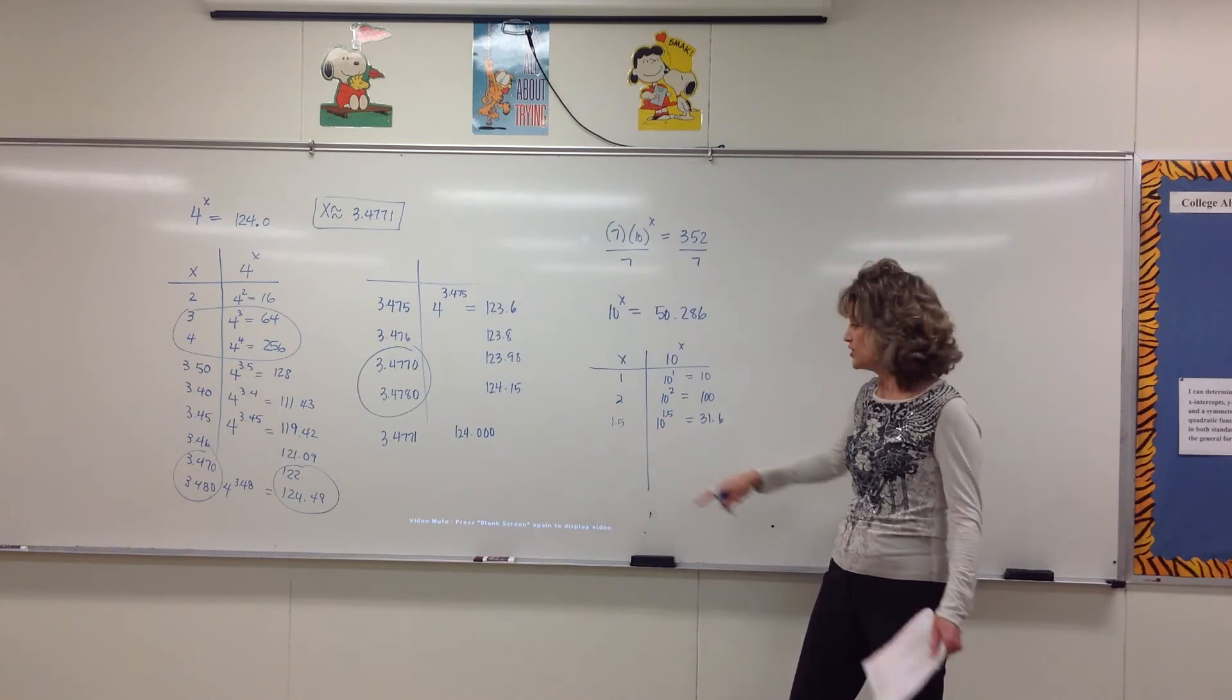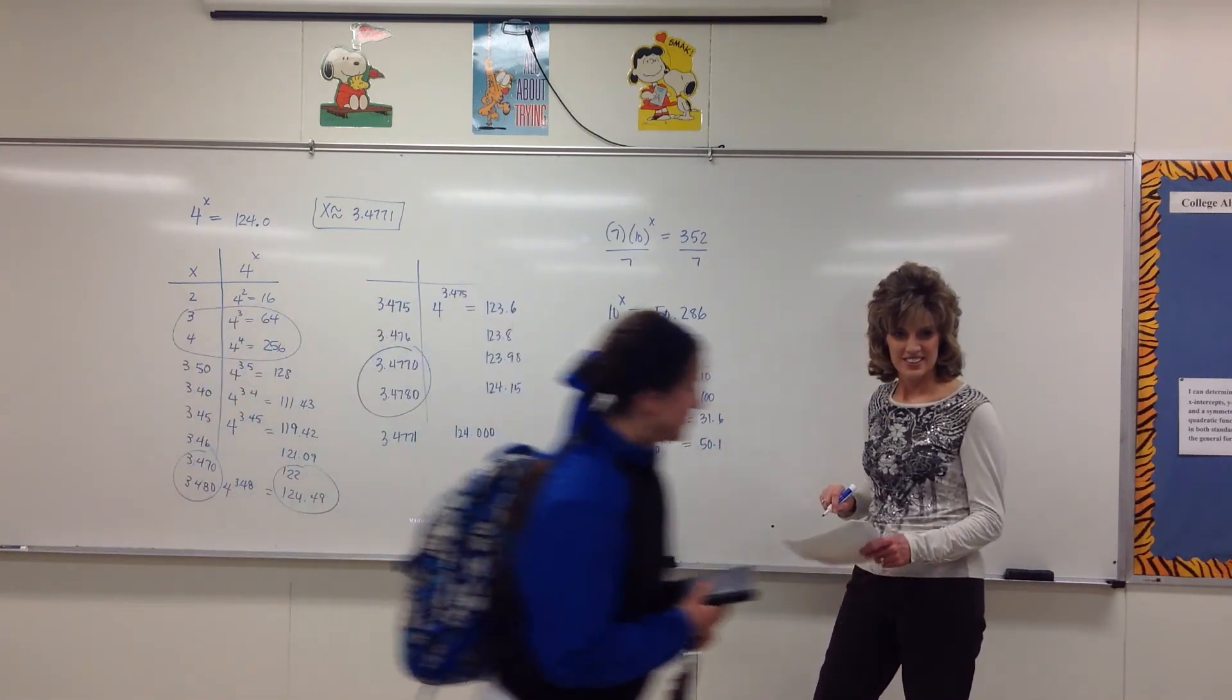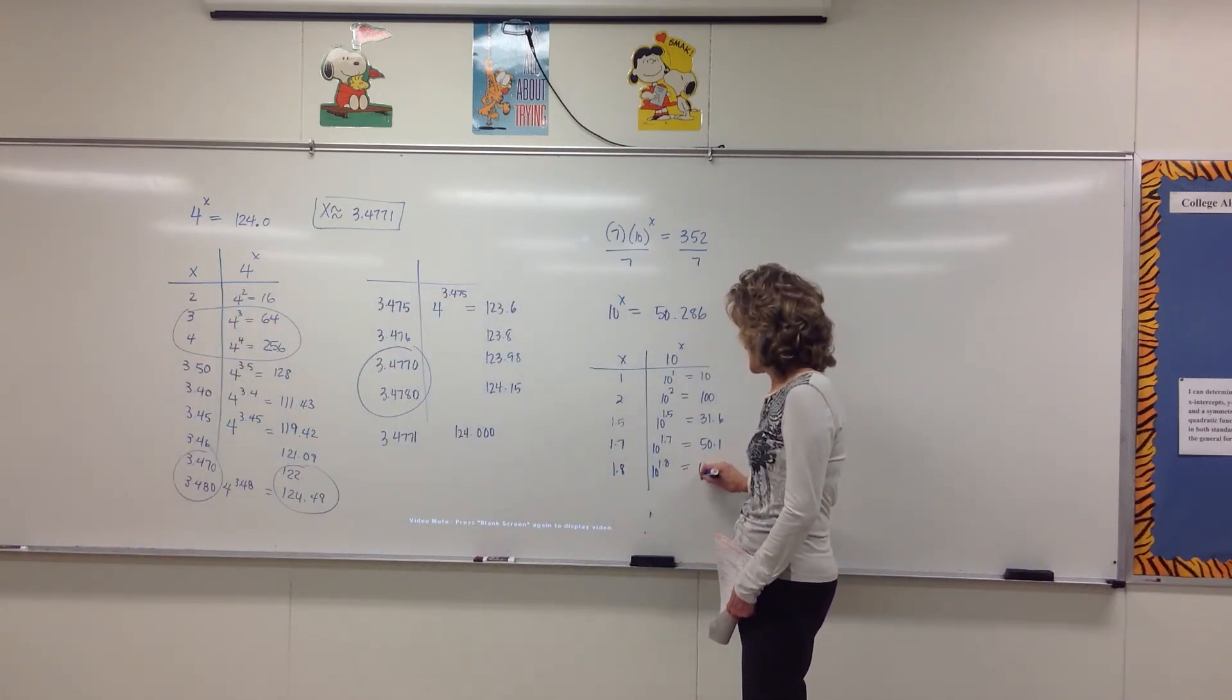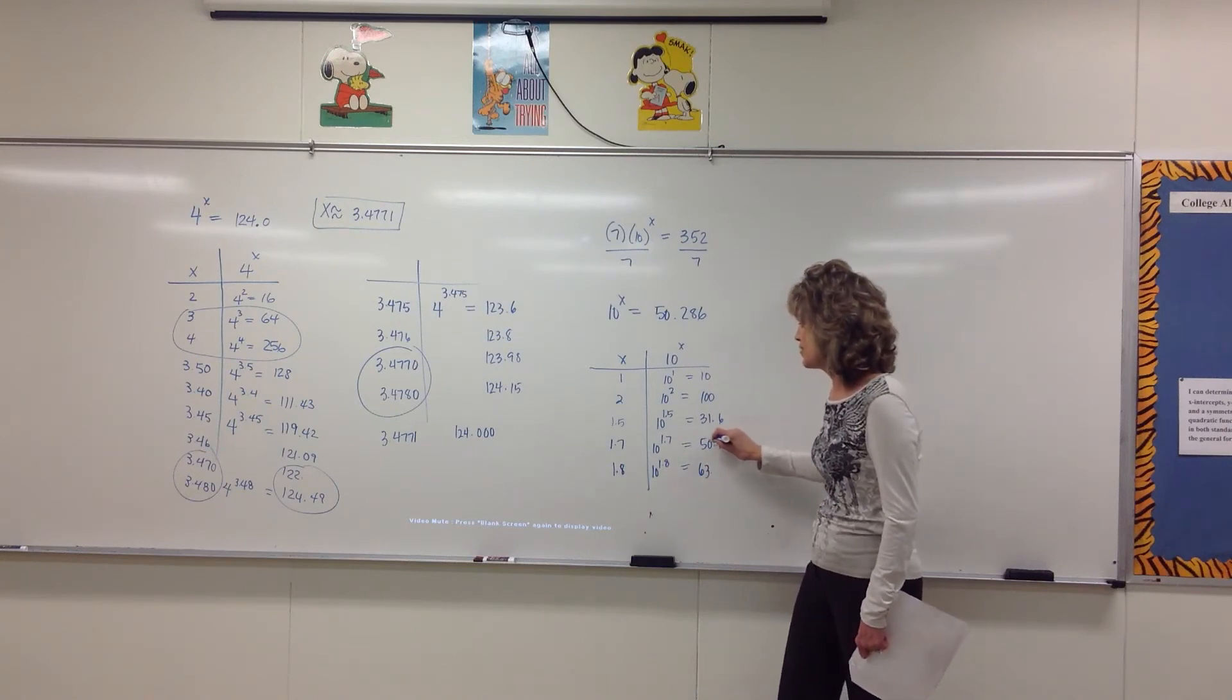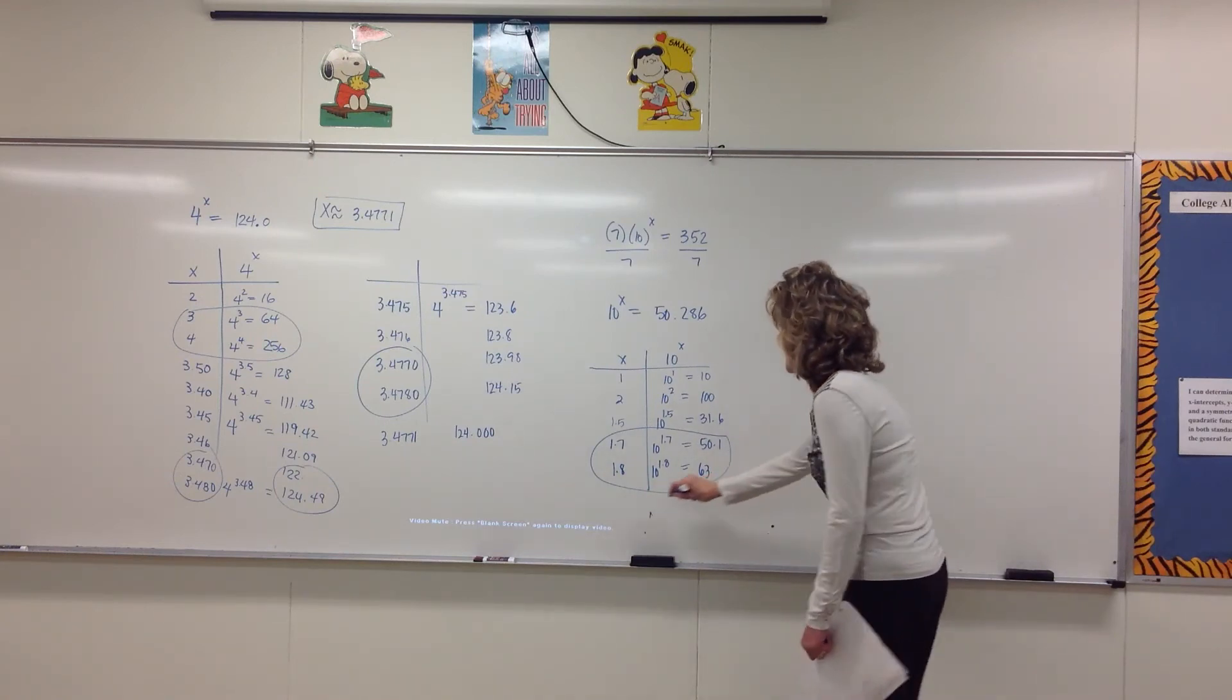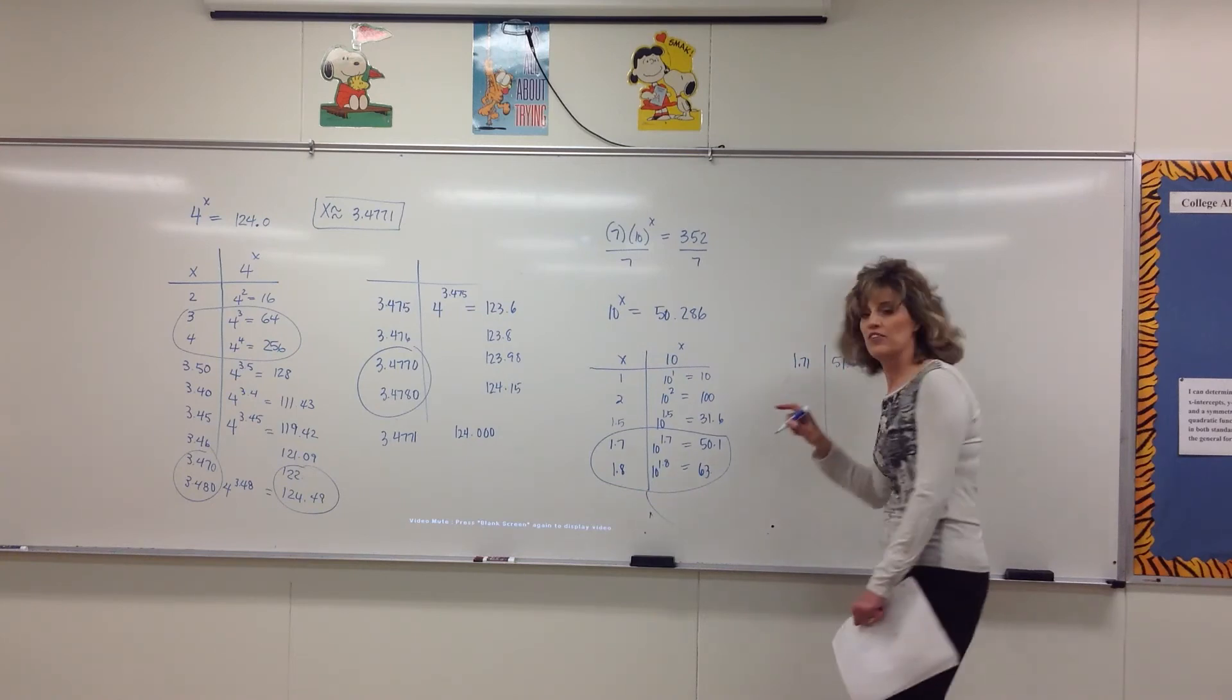So let's try 1.7. 10 to the 1.7. But 10 to the 1.8 is 63. We know that the exponent, we're looking for 50.286, it's got to be between 1.7 and 1.8. Which one is it closer to? 1.7. Yeah. So if you try 1.71, so if we try 1.71, what did we get? 51.286. At first you look at that and you go, hey, we got it, it matched 0.286. Oh no we didn't, because it's 51 and it needs to be 50.